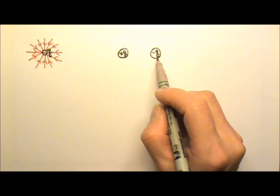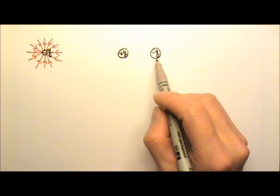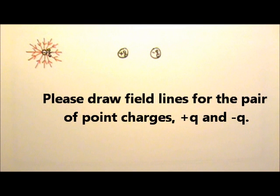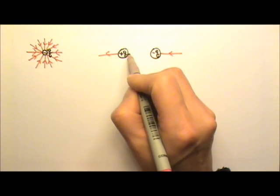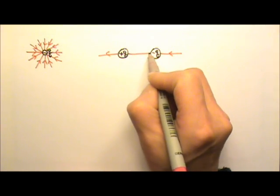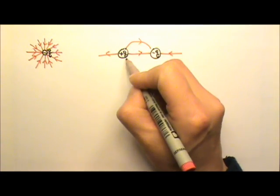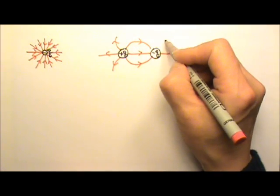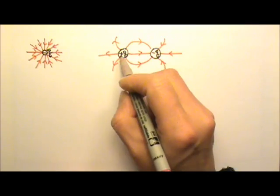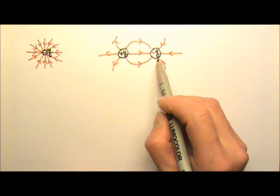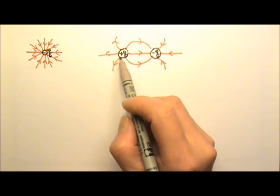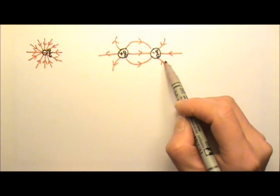What if you have a positive charge and a negative charge of the same amount — positive Q and negative Q right next to each other? In this case, the lines will still come out of the positive charge and go into the negative charge. The lines don't have to go to infinity because they can go right from the positive charge into the negative charge. Since these two charges have the same amount, it's symmetric, with equal numbers of lines — six lines coming out of the positive Q and six going into the negative Q.